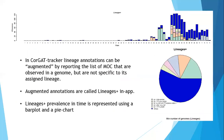Furthermore, to enable a more efficient tracking of emerging lineages, in CorgatTracker, lineage annotations can be augmented by reporting the list of mutations of concern that are observed in a genome but that are not specific to its assigned lineage. These augmented annotations are called lineages plus in app, and their prevalence in time is represented through a bar plot and a pie chart, as you can see in the pictures reported.